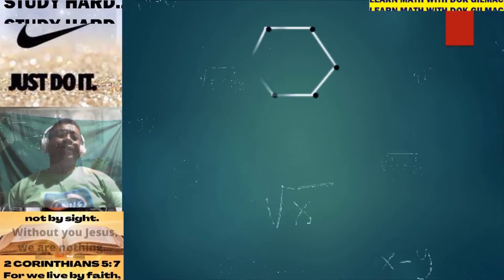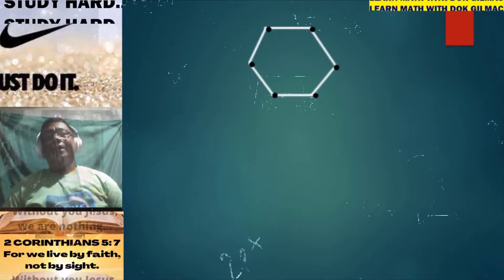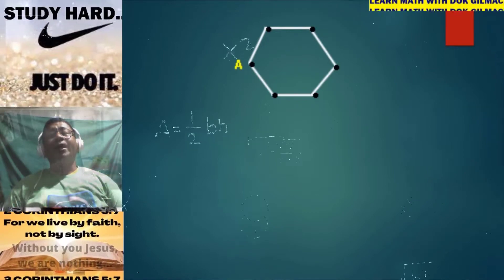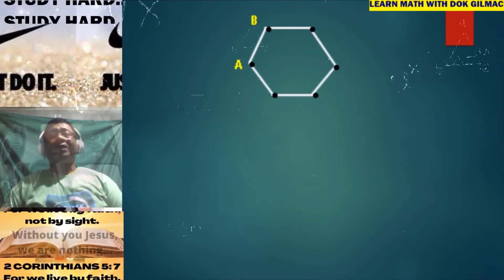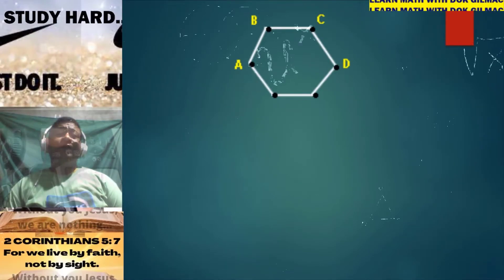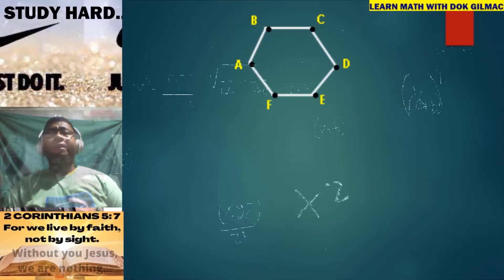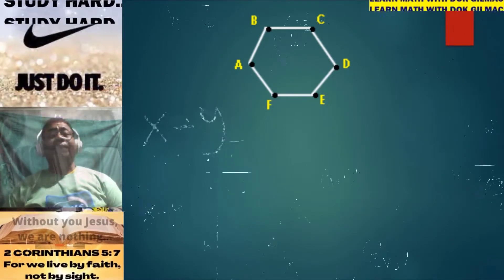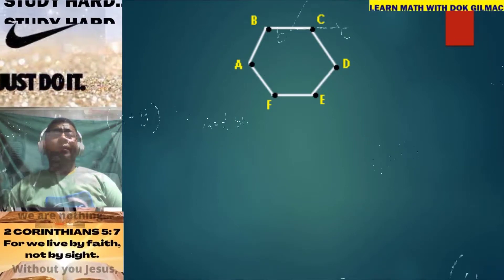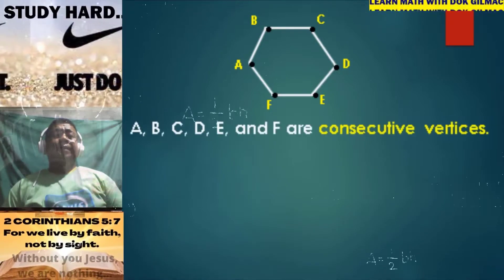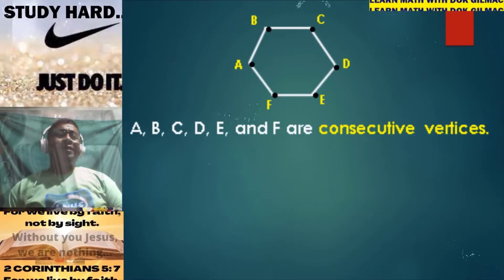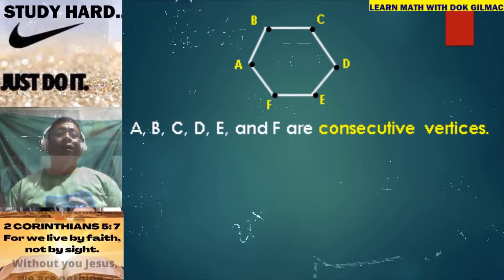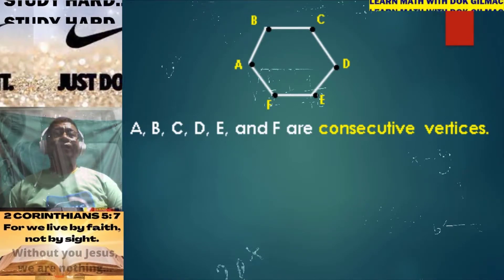Consider the given polygon here, class, where we have vertex A, vertex B, vertex C, vertex D, vertex E, and vertex F in this given polygon. Vertices A, B, C, D, E, and F are what we call consecutive vertices.